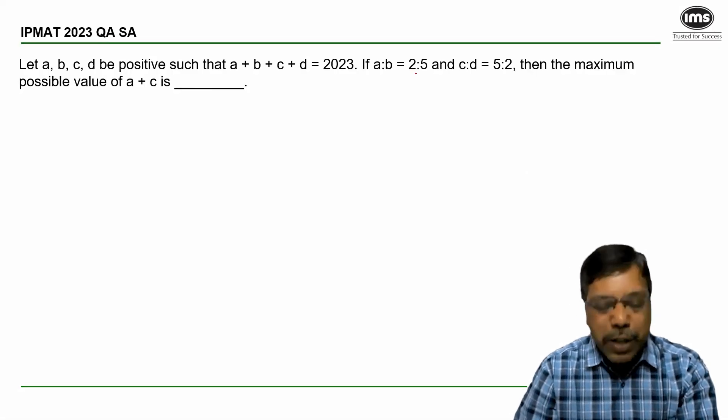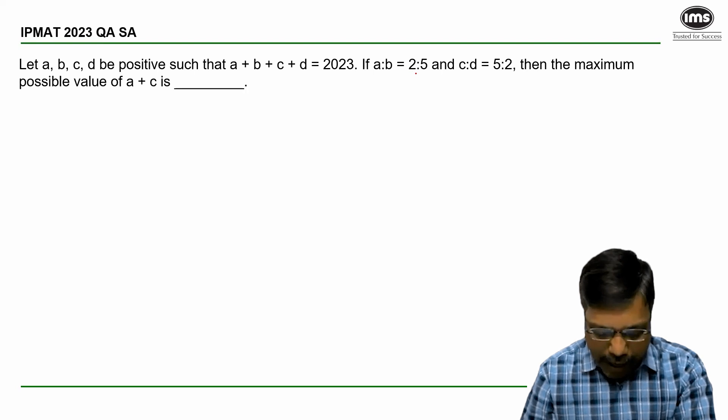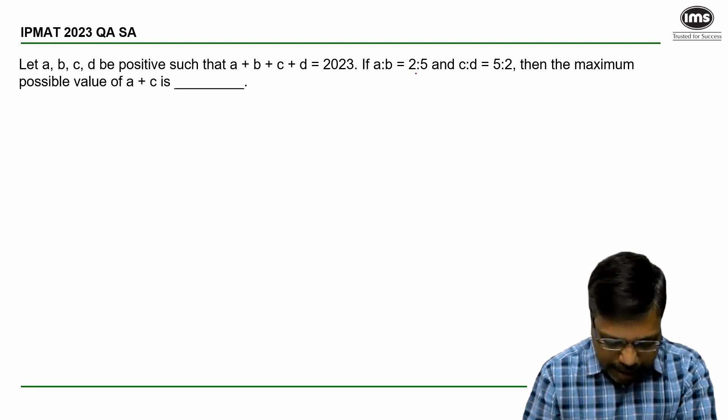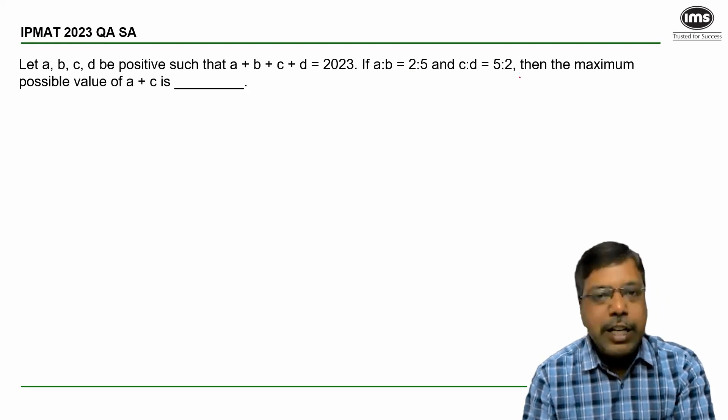Now, let us see how to answer this question. A, B, C, D are positive values such that their sum is given as equal to 2023. A is to B, C is to D are given.